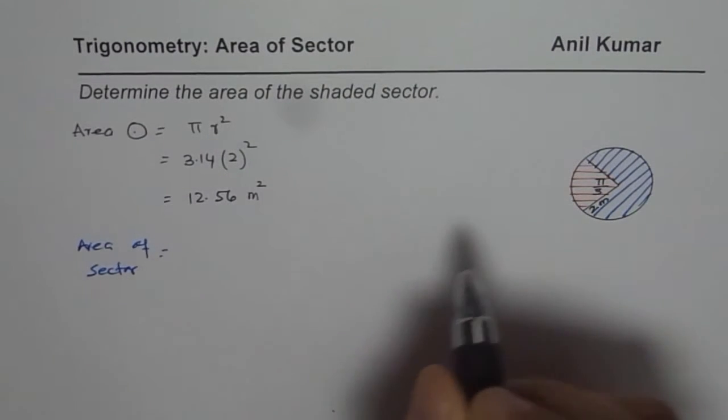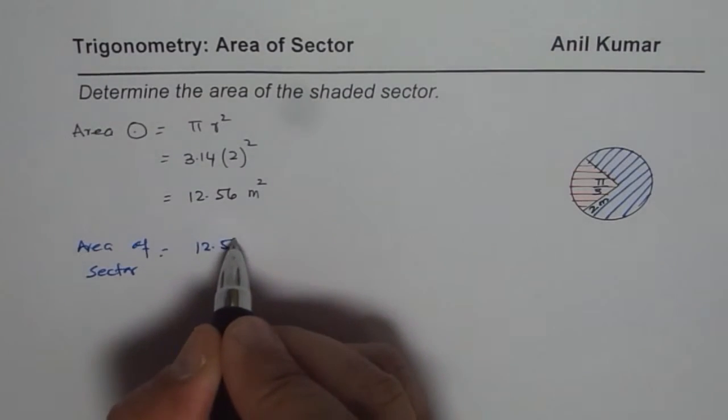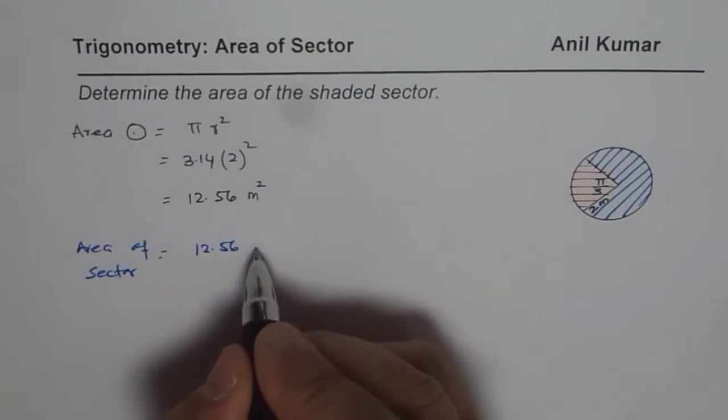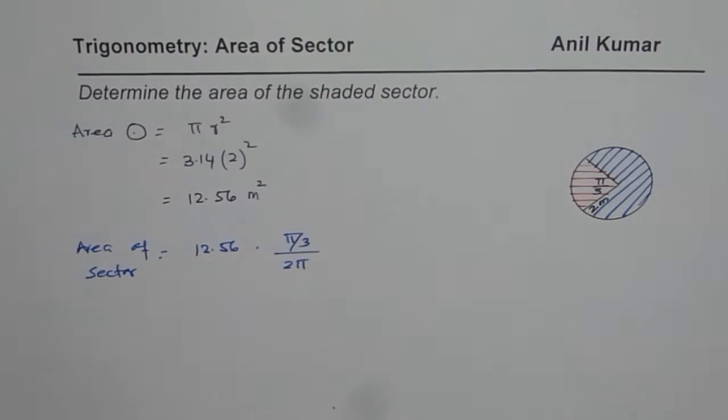So the next step is find area of the sector. As you know, area of the sector will be, you have to find ratio of the angles. So it is 12.56, area of the circle, times ratio of the angles which is pi by 3 over 2 pi. So it is 1 sixth of the circle.